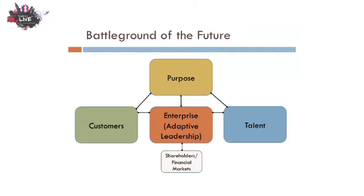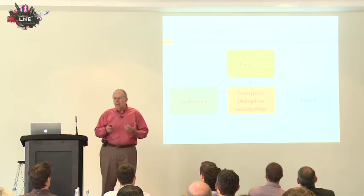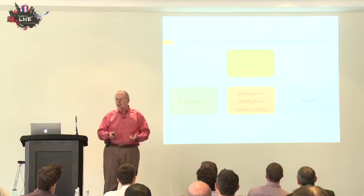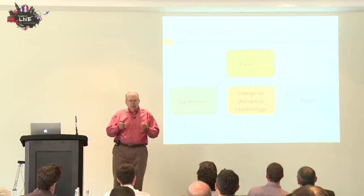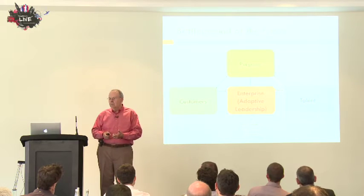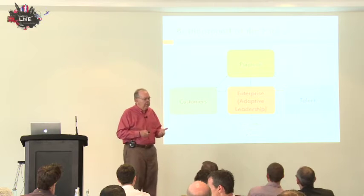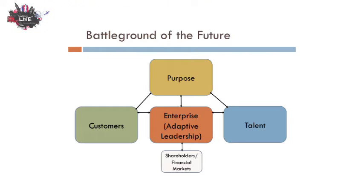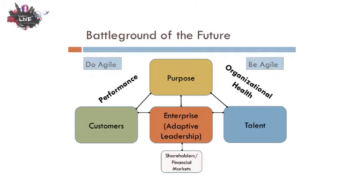This is a model for the future: two things will drive success. Number one, getting and keeping customers and building solutions for customers. Number two, attracting, training, and retaining the best talent. If you're going to operate in a world where you need to be responsive to customers, you need talented individuals. So how do you both perform for customers and have an organization where talent really wants to work? It really comes down to performance and organizational health — what I simply call being agile and doing agile.